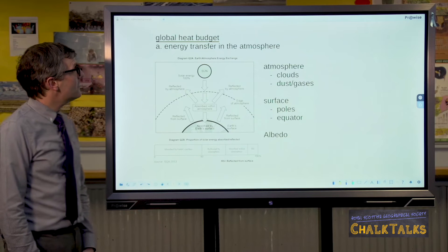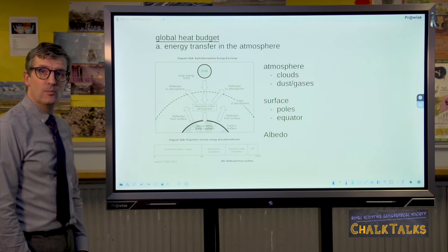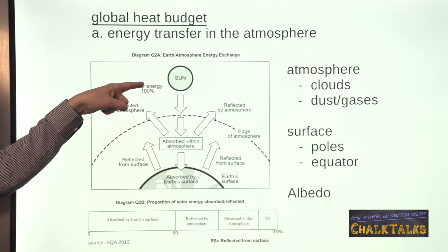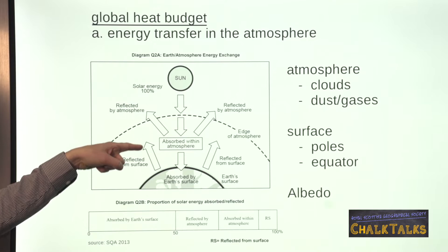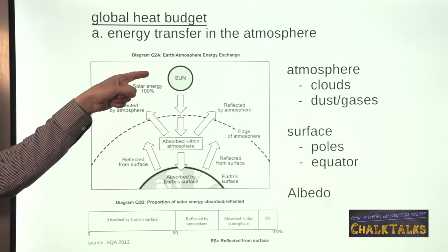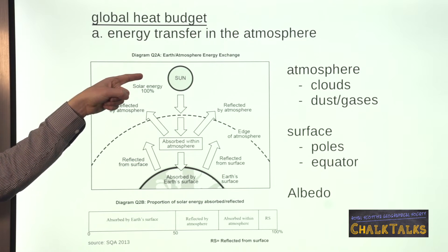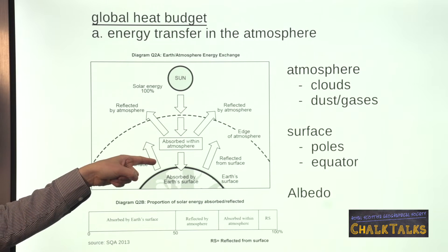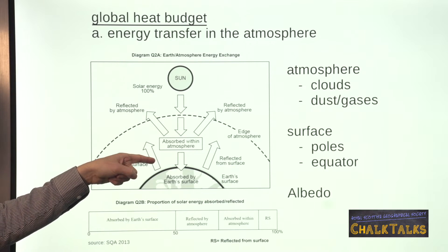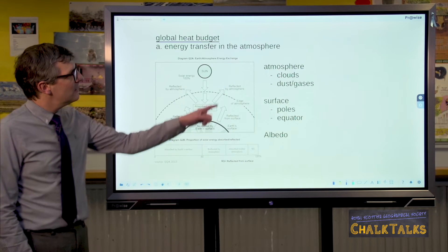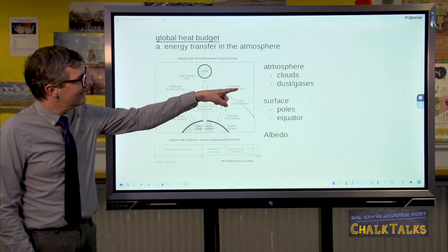So the first part of the atmosphere topic is the global heat budget. This refers to what happens to the energy coming from the sun as it passes through the atmosphere. If the energy coming from the sun is 100%, then only 52% actually reaches the Earth's surface. That's because it's reflected and absorbed by the clouds, dust and gas.